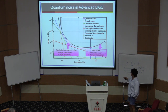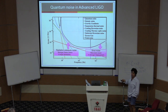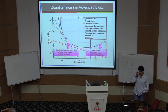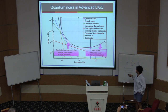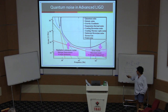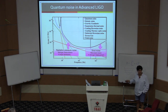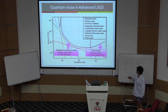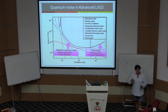Heisenberg requires it. Heisenberg says: if you know this part too well, you must not know this part too well. In this region of the spectrum we are measuring phase fluctuations, and in this part of the spectrum we're sensitive to amplitude fluctuations. This is just the Heisenberg uncertainty principle expressed in terms of amplitude and phase, but applied to an interferometer.